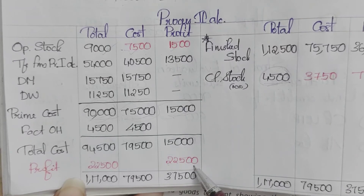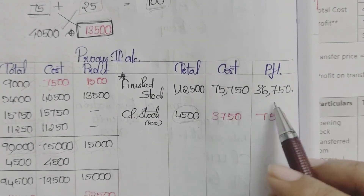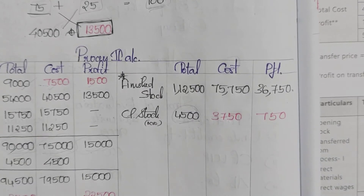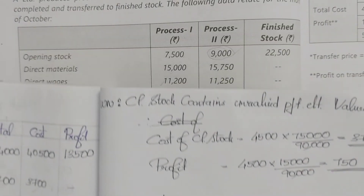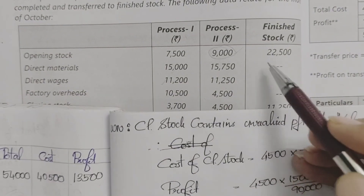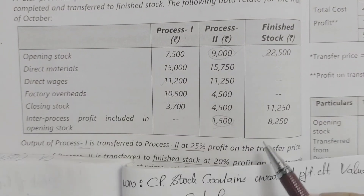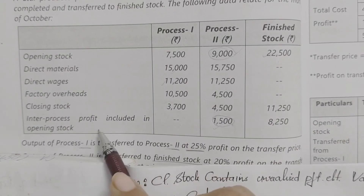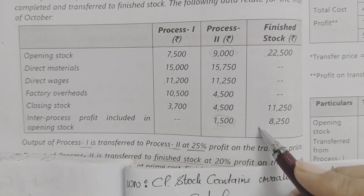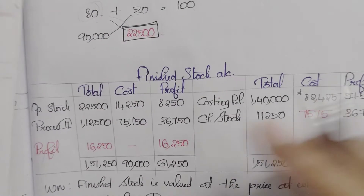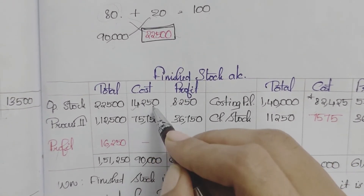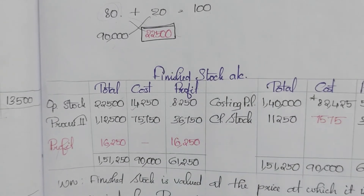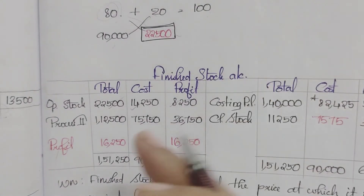Profit of 22,500 is the balancing figure transferred to finished stock account. Finished stock account is prepared: opening stock is 22,500, with inter-process profit included in opening stock of 8,250 as the profit element, and cost element of 14,250.